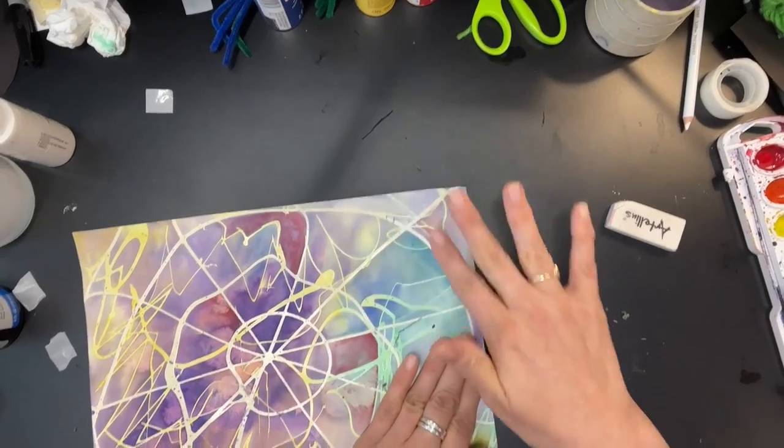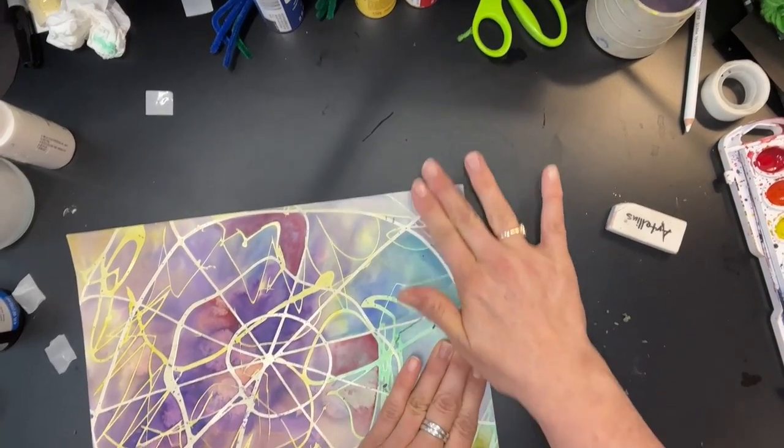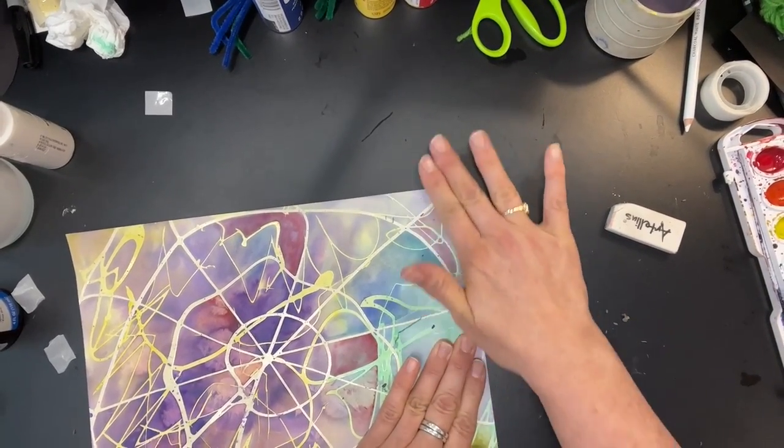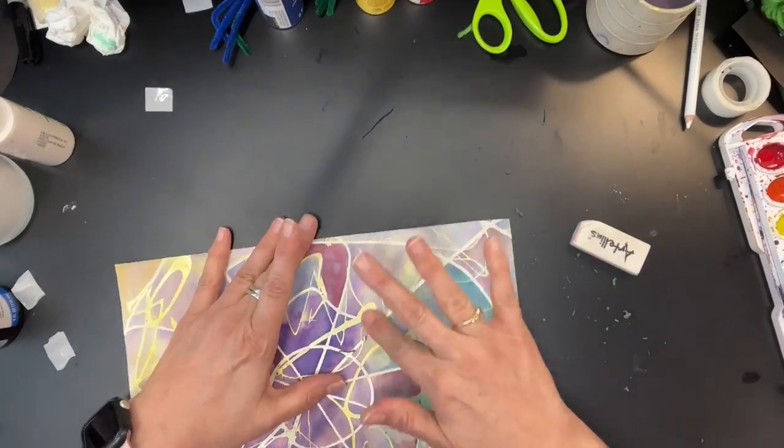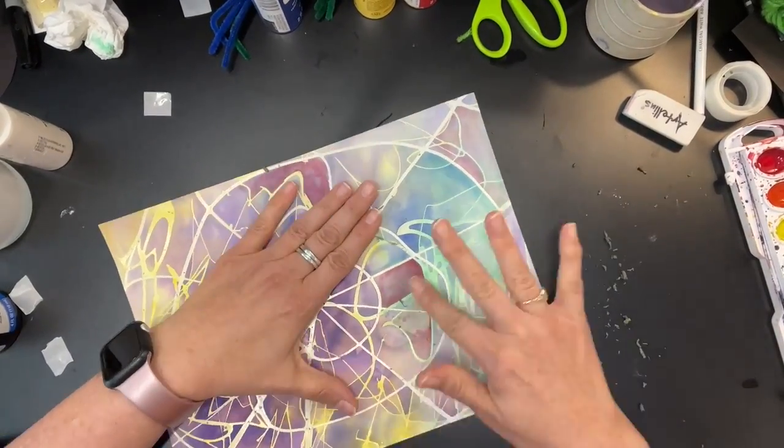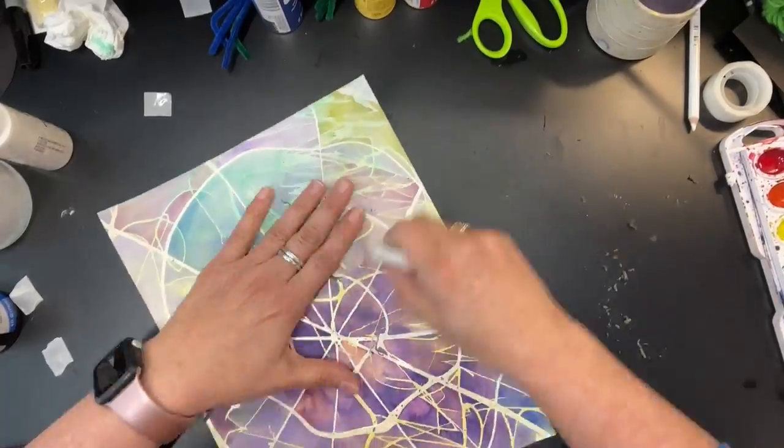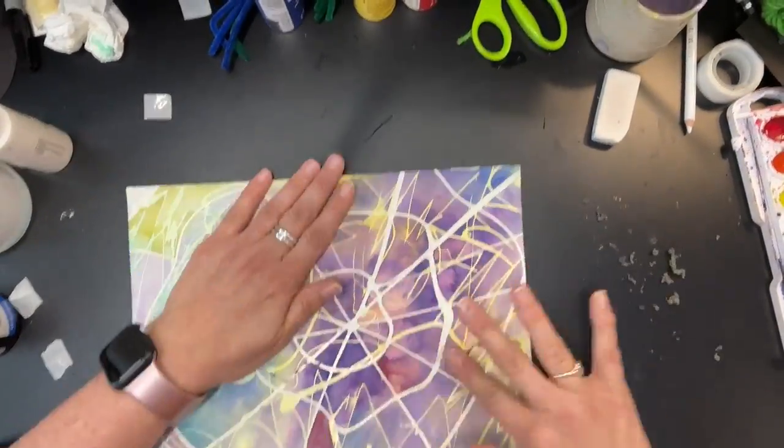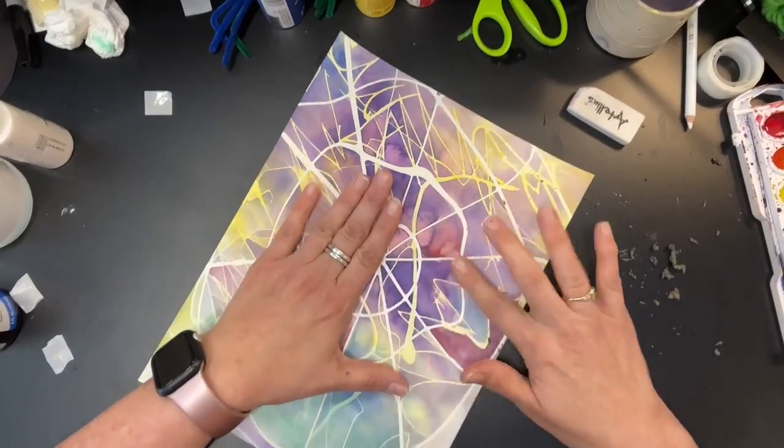But you don't want to wrinkle your paper and you don't want to smear paint onto the white parts that are showing through. Also, you want to keep the crumbs next to you because we're going to throw those away. Don't push them onto other people's art or onto the floor.